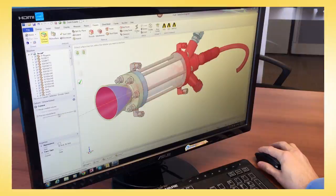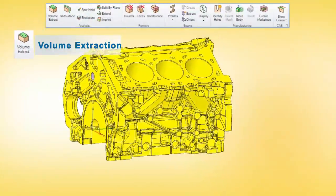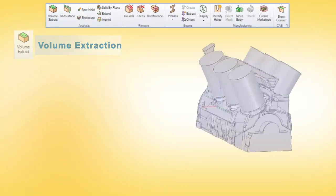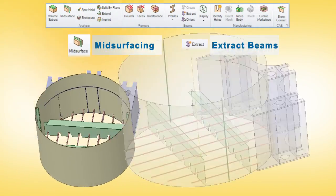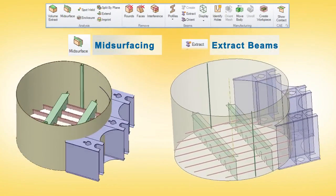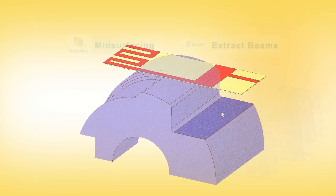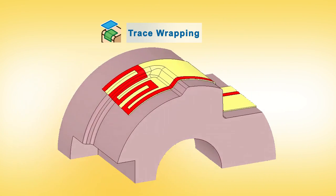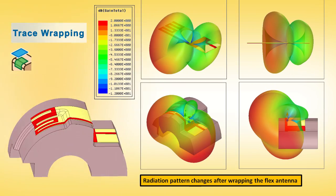SpaceClaim even provides physics-specific tools for structural, fluids, and electronics. There's no waiting for a pre-processor that extracts a volume with just a few button clicks, or identifies and extracts all mid-surfaces and line elements from structural assemblies, even accurately wrapping circuits on substrates within electronics assemblies is now a reality.